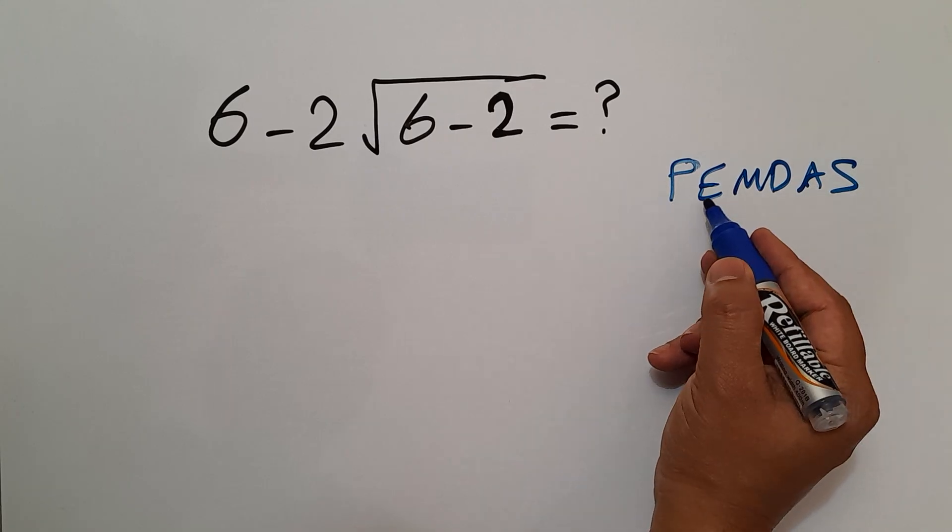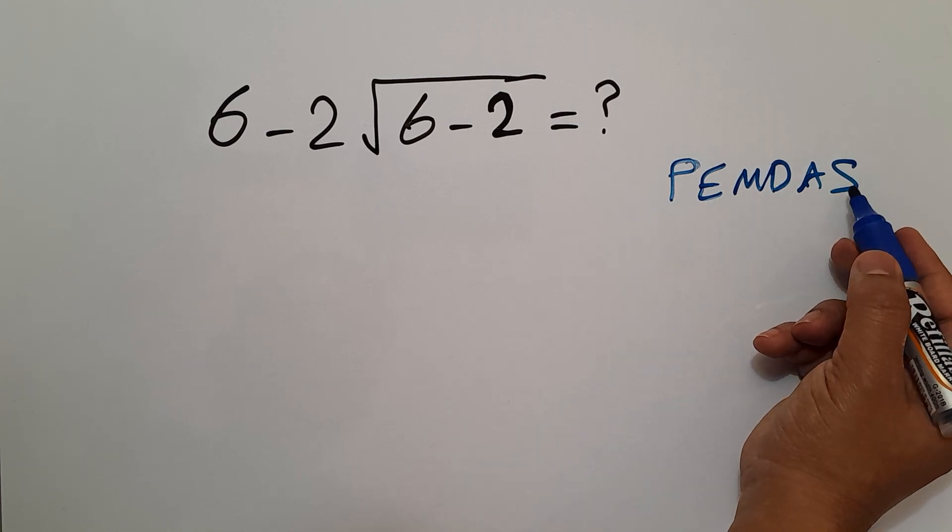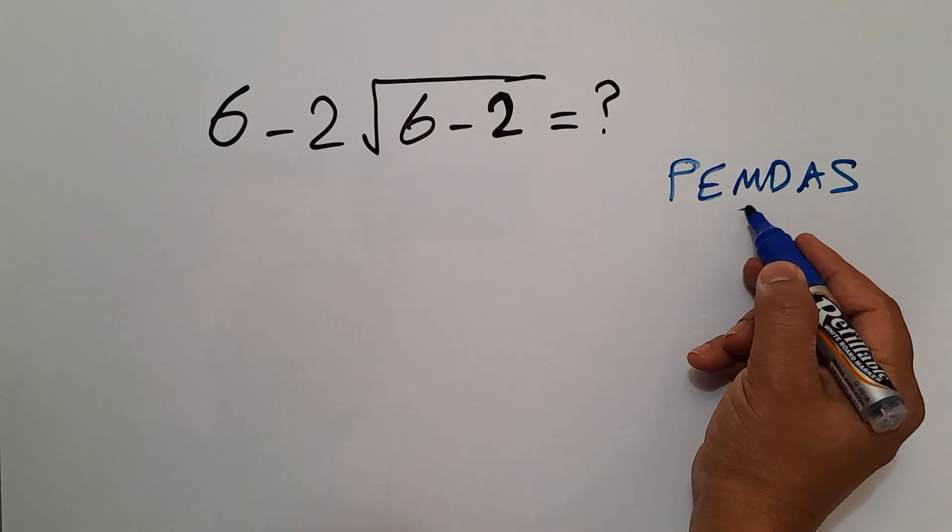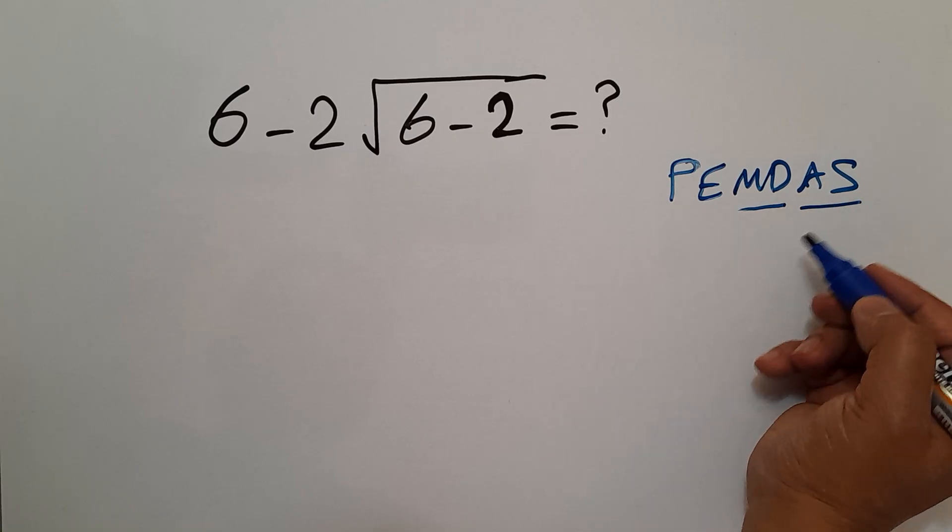We first do parentheses, then exponents, then multiplication and division, and finally addition and subtraction. Remember that multiplication and division have equal priority and we have to work from left to right. The same applies to addition and subtraction.